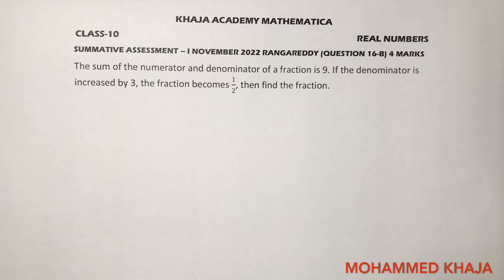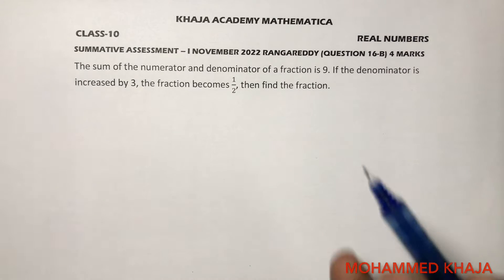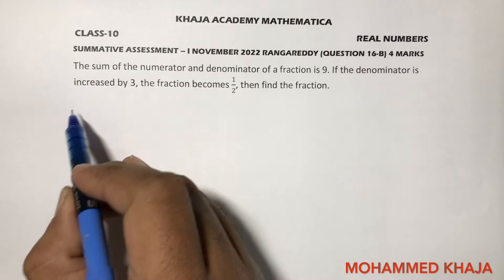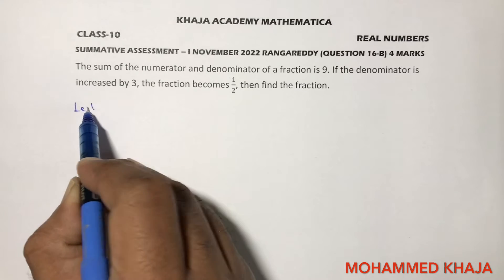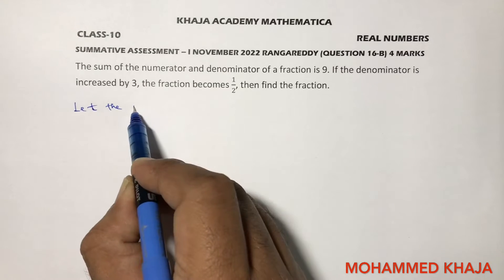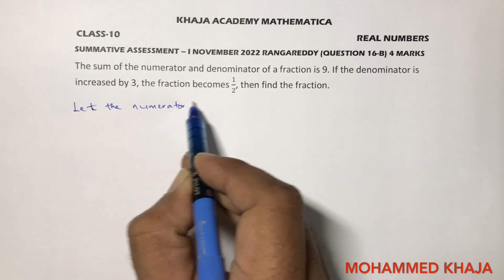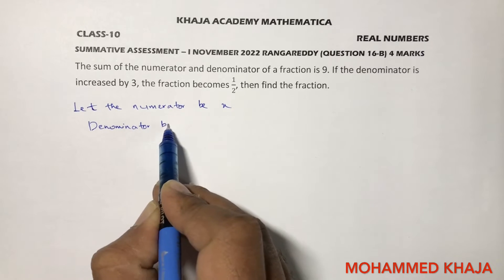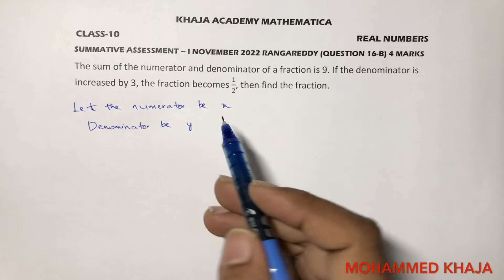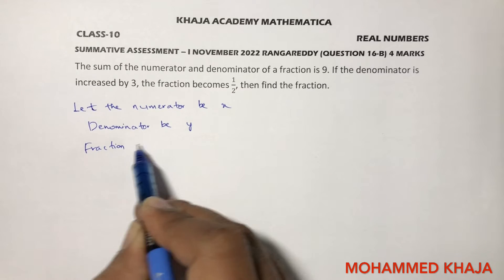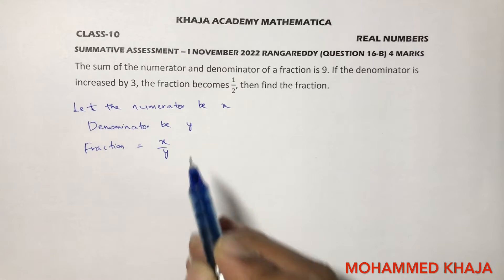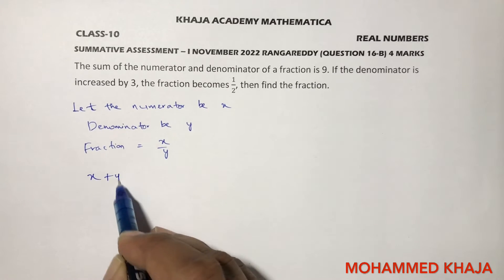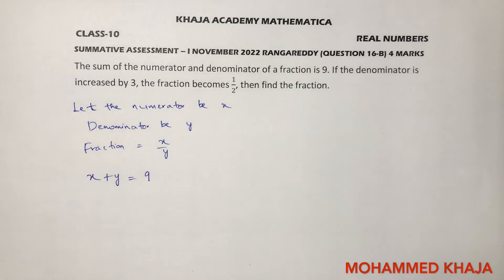The sum of the numerator and denominator of a fraction is 9. If the denominator is increased by 3, the fraction becomes 1 by 2. Find the fraction. Whenever a problem is based on fractions, first let the numerator be x and the denominator be y respectively. So the fraction is x by y. The sum of the numerator and denominator is 9, so x plus y equals 9.